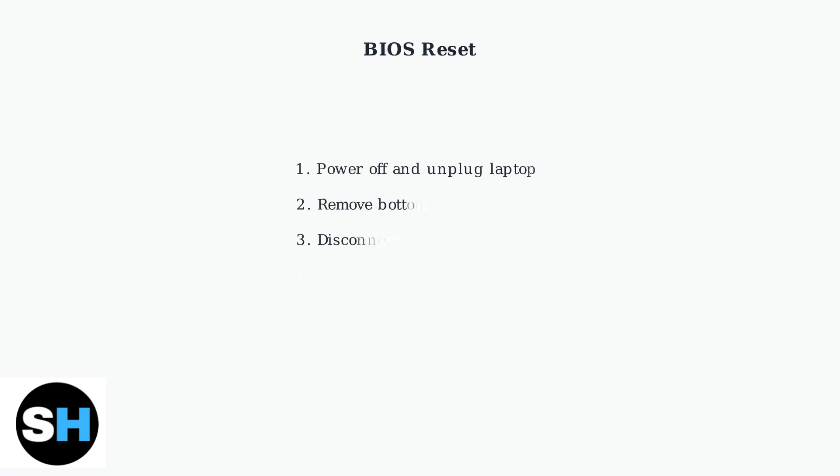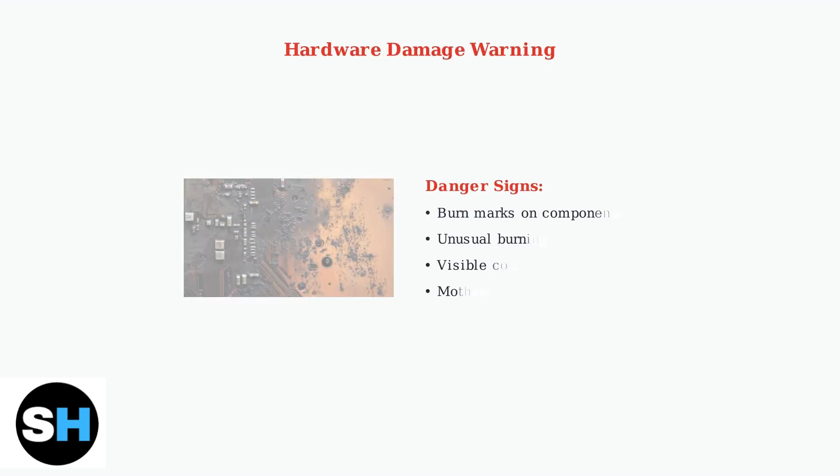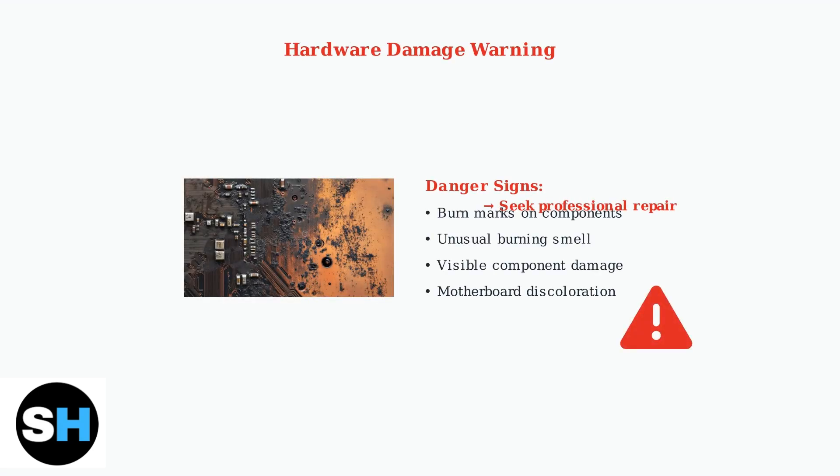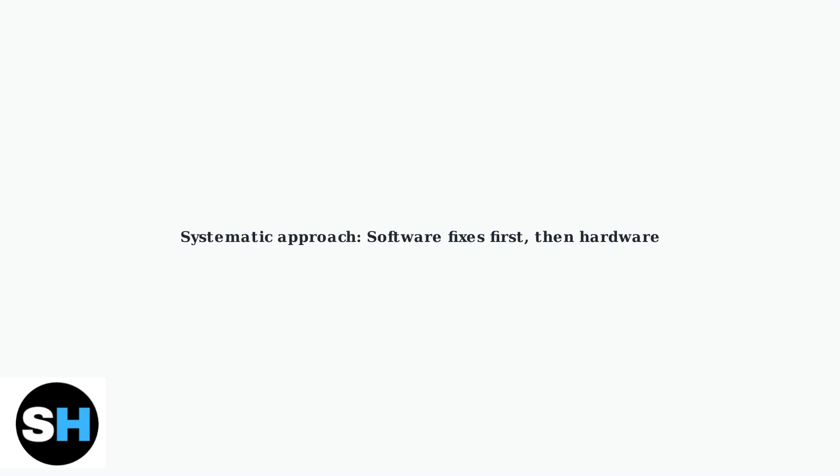Disconnecting the main battery can reset the BIOS and clear any corrupted settings that prevent startup, and is often effective for persistent boot issues. Be aware of serious hardware damage signs — burn marks, unusual odors, or visible component damage indicate potential motherboard failure requiring professional repair. Modern gaming laptops are complex machines, but many issues can be resolved with systematic troubleshooting. Start with simple resets, then progress to hardware checks if needed.